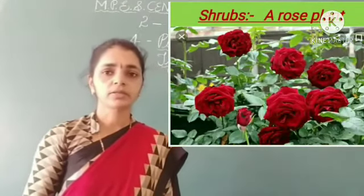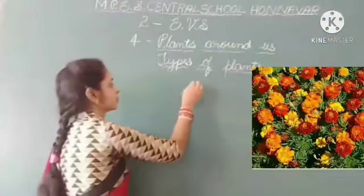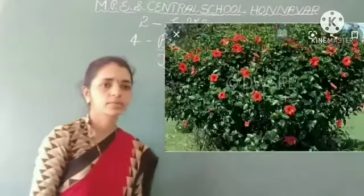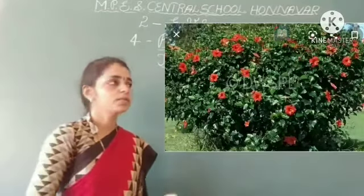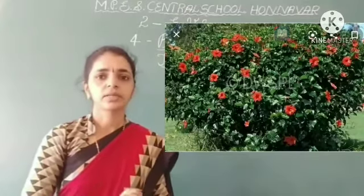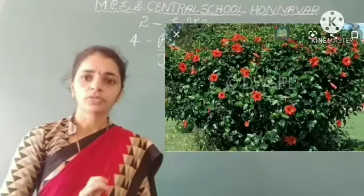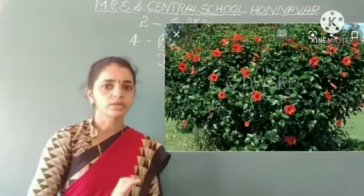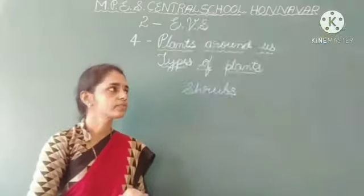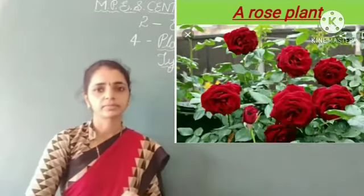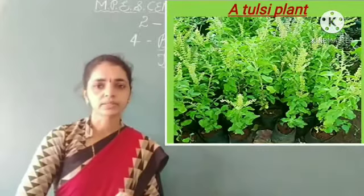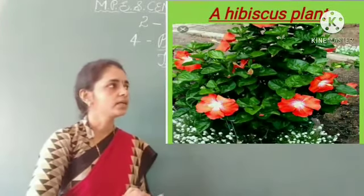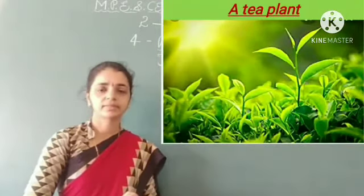These are shrubs. Shrubs are smaller than trees. They have woody stems and grow close to the ground. For example, a rose plant, a tulsi plant, a hibiscus plant and a tea plant.